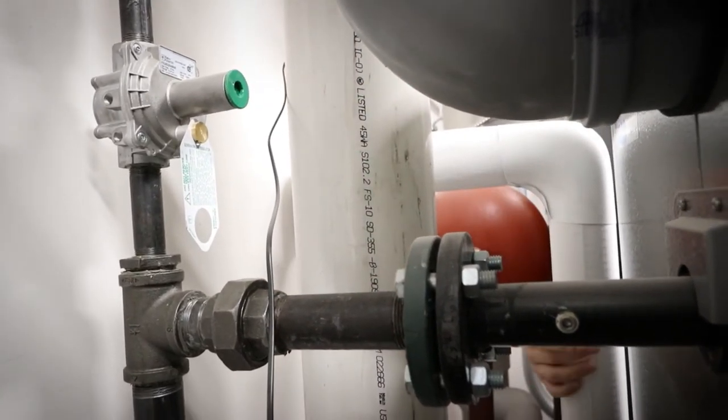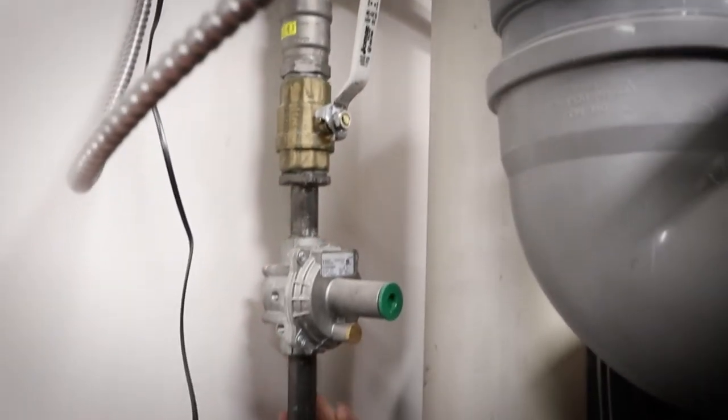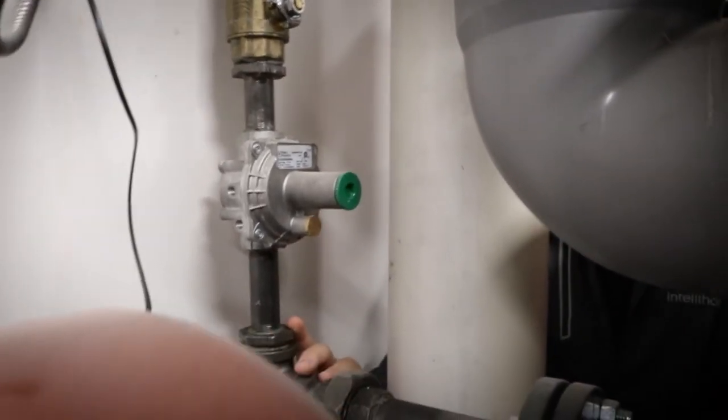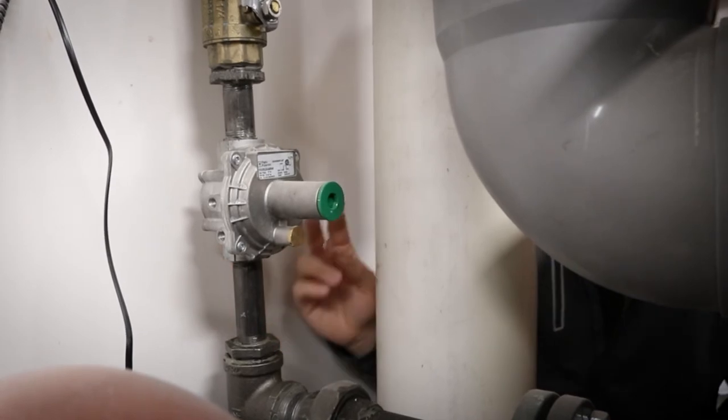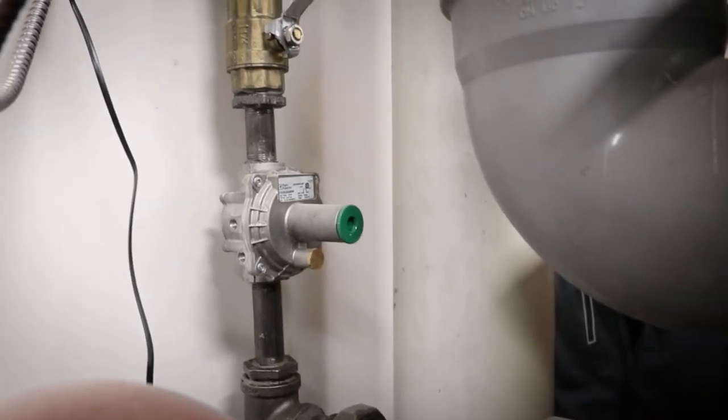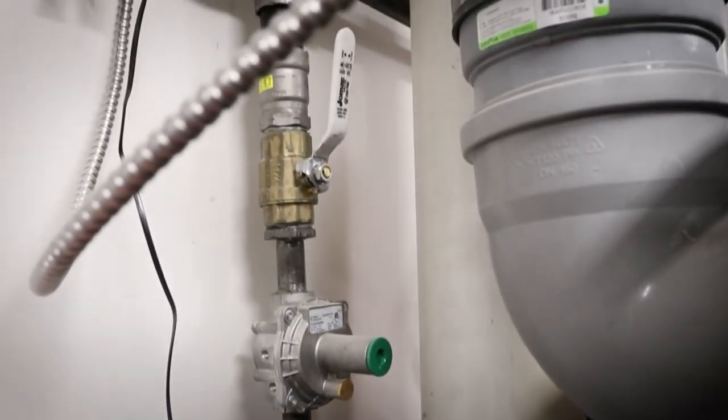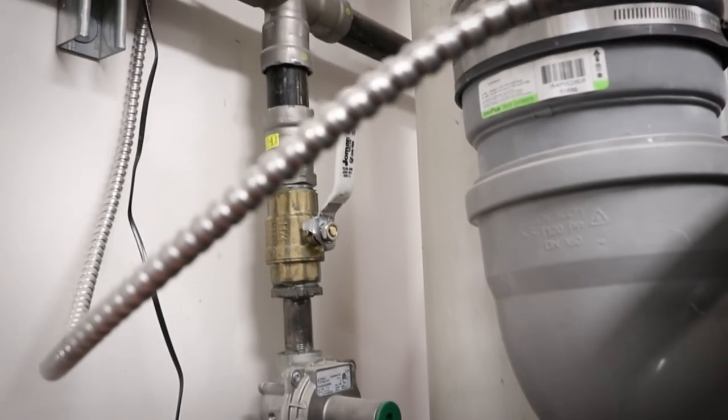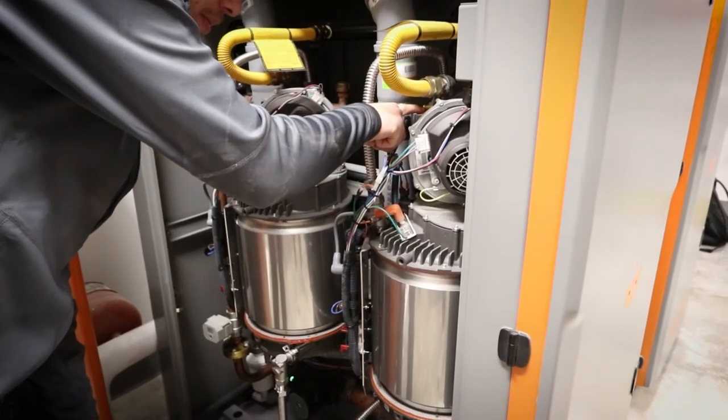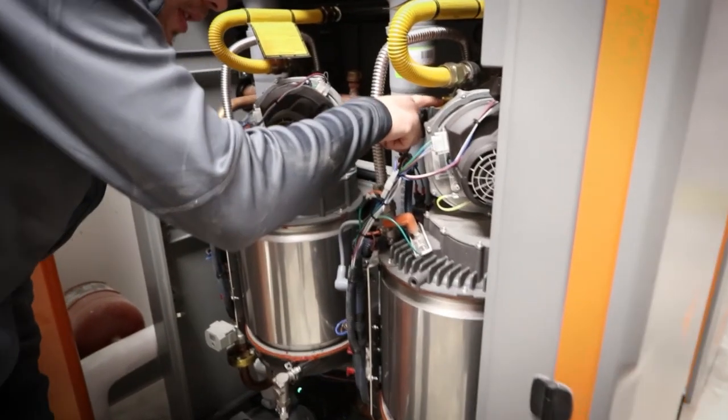Size the gas regulator based on the BTU rating of the unit and install it per the manufacturer's requirements. Use the gas regulator to set the gas pressure at 8 inches of water column for a natural gas unit and 11 inches of water column for a propane unit if possible. When setting the gas pressure, ensure at least one heat exchanger is firing.